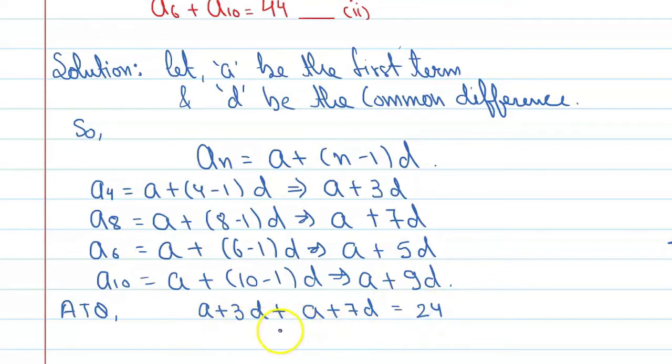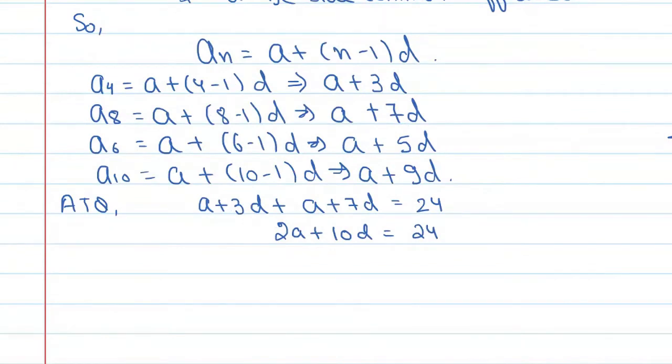So, if you talk about solving it then you will get 2a plus 10d is equal to 24. Therefore, if you divide by 2, then you will get A plus 5d is equal to 12. And say, this is the equation number 3.